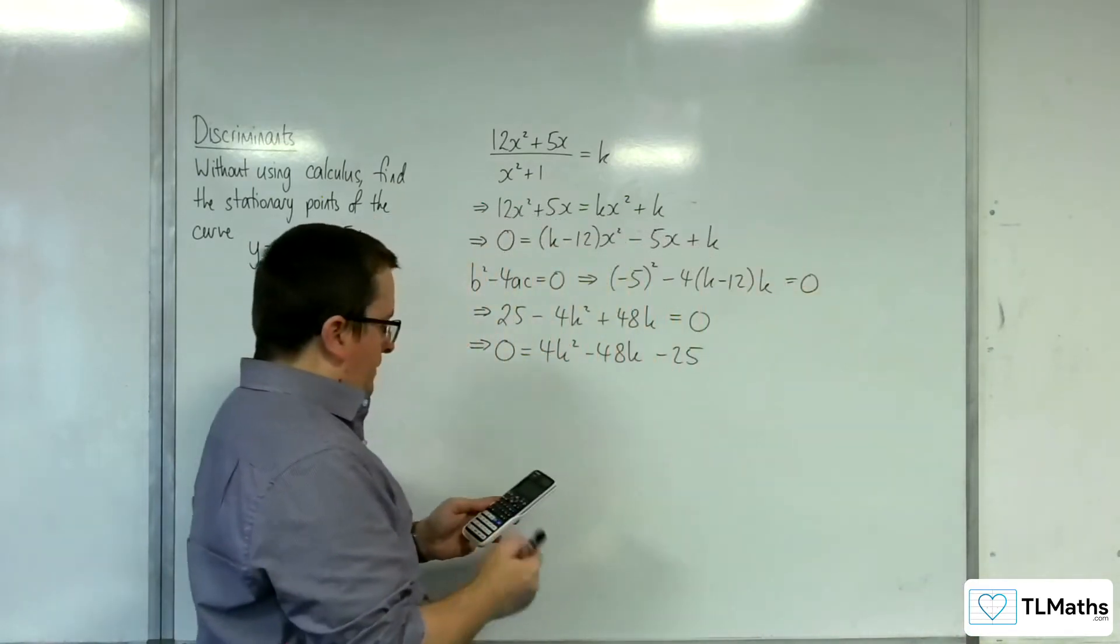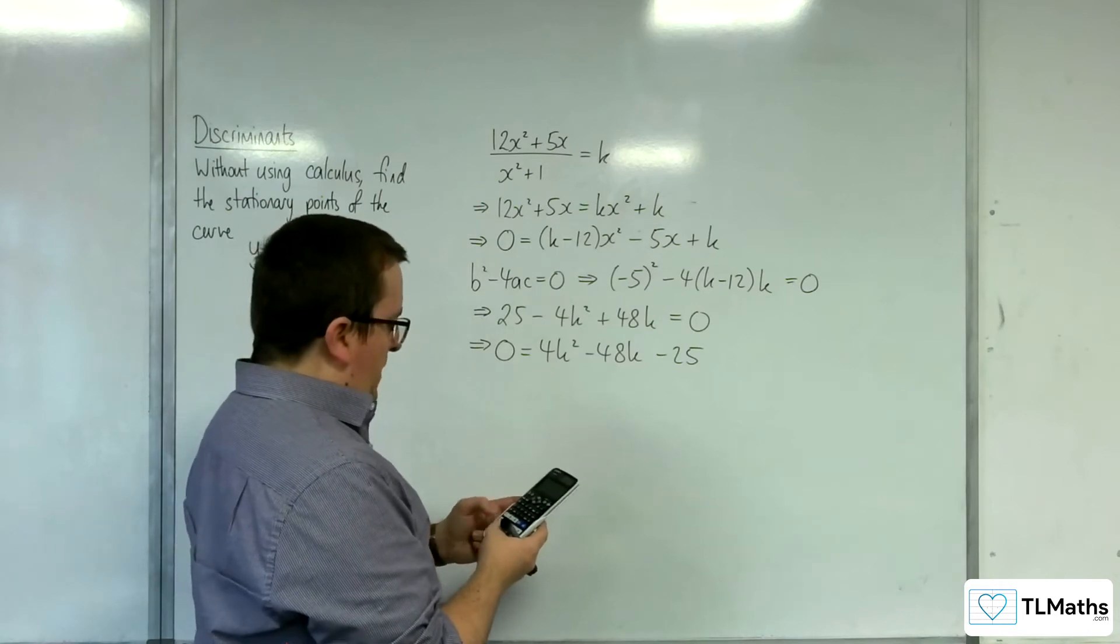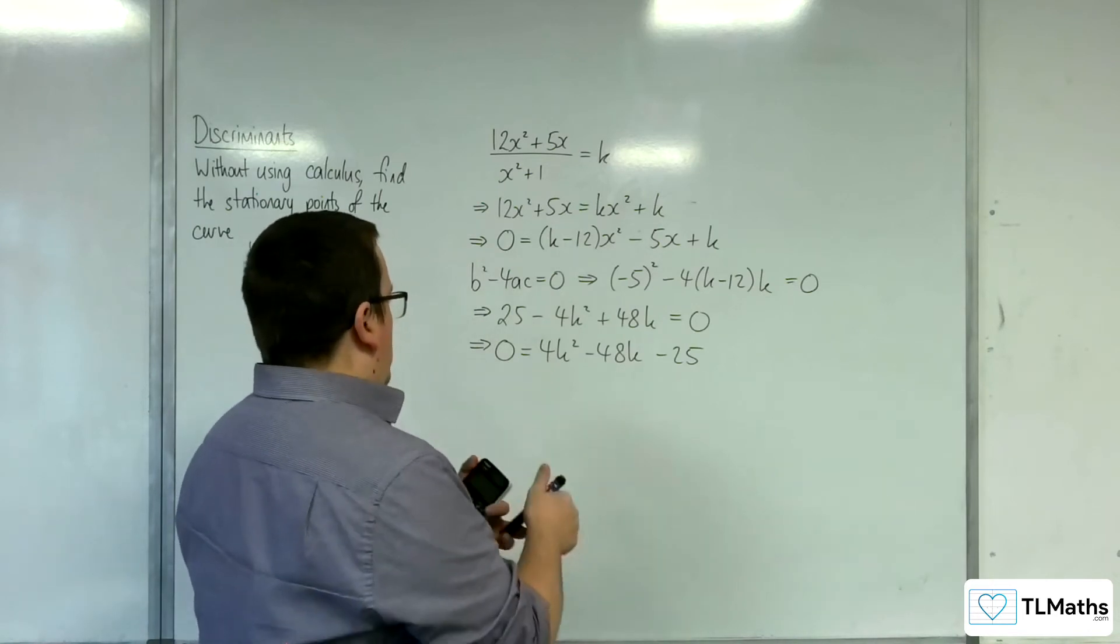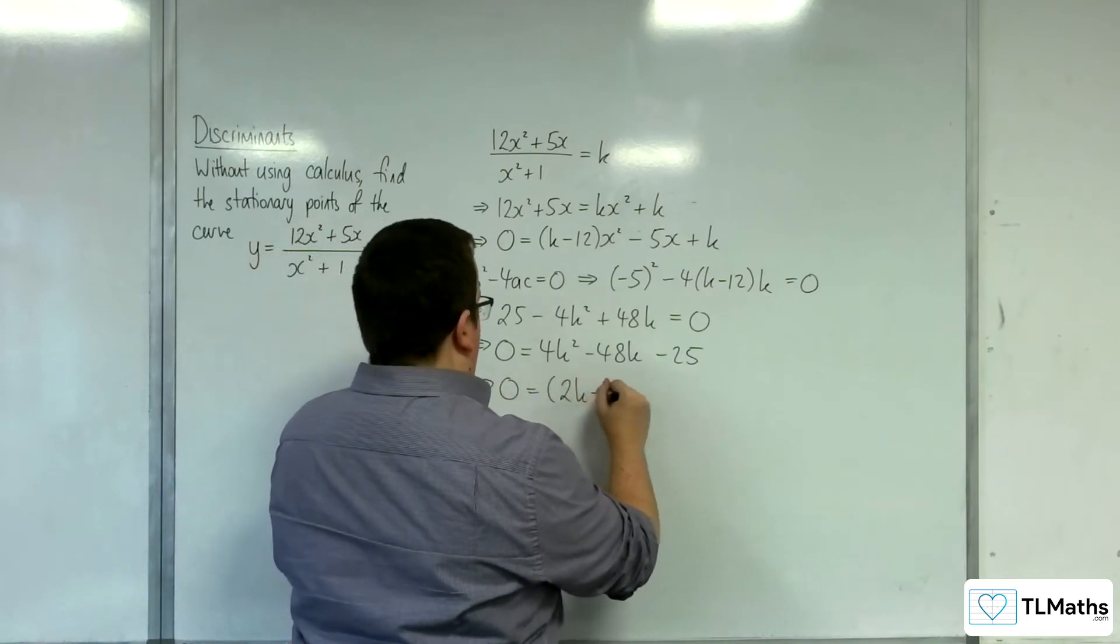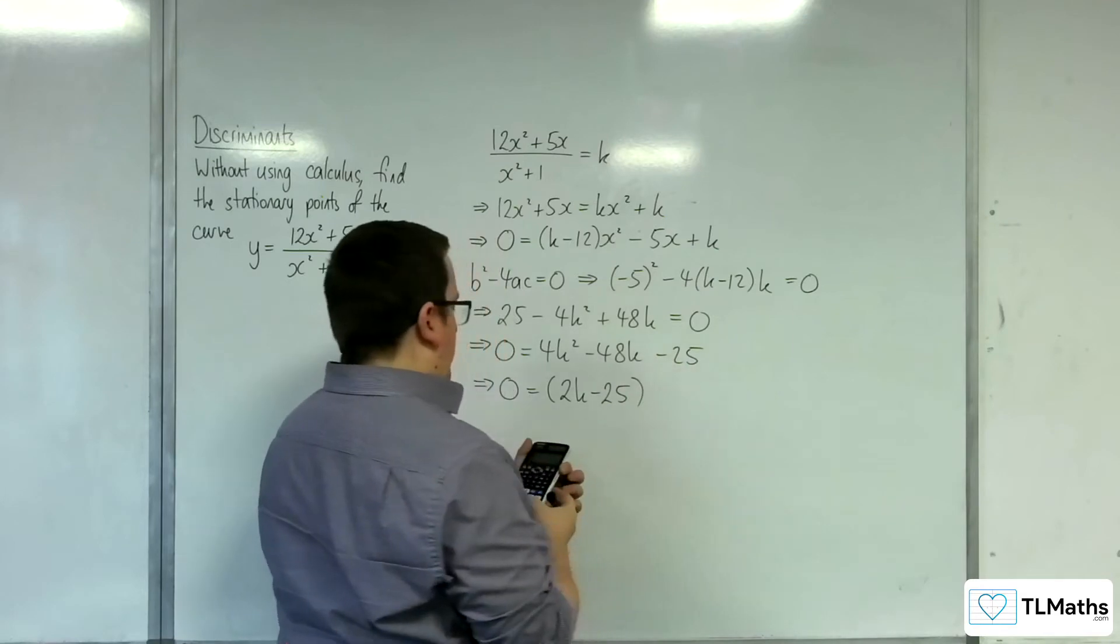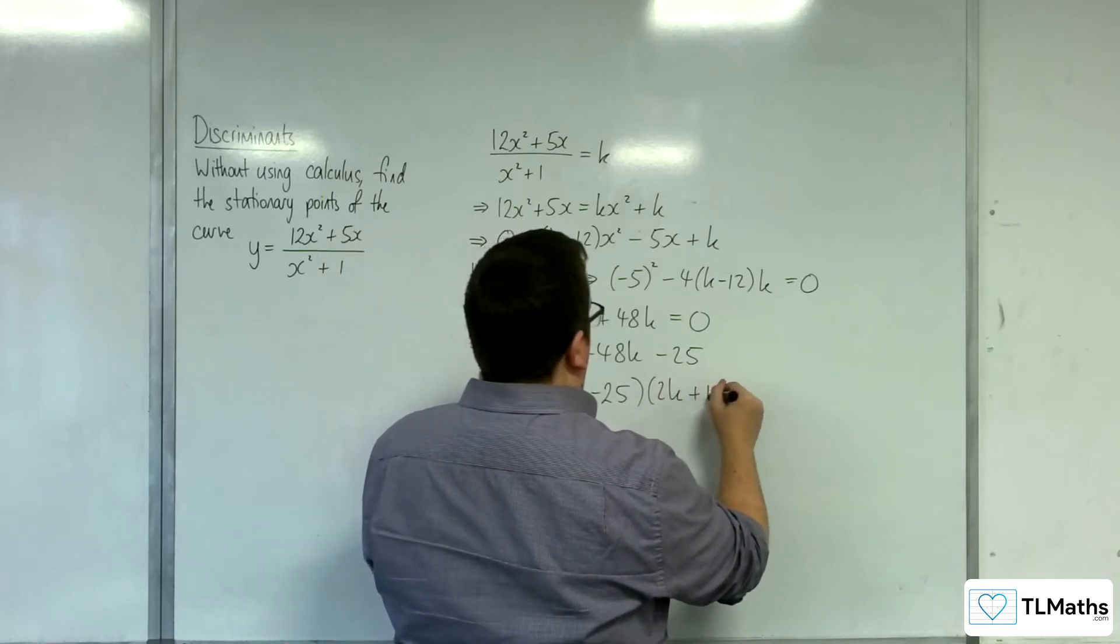So this is going to factorise to 2k take away 25, and then 2k plus 1.